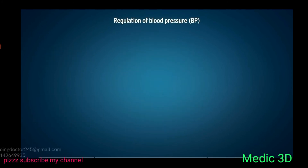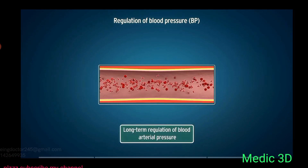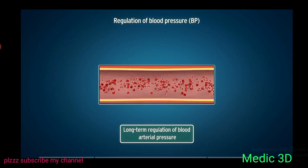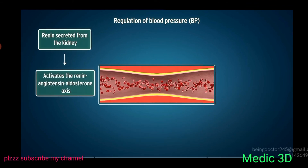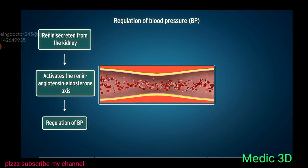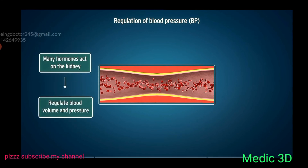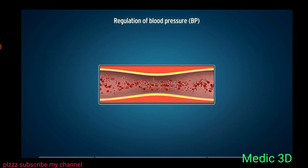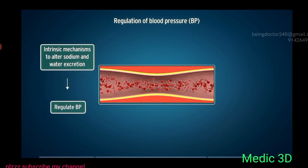Kidneys contribute mainly to the long-term regulation of arterial blood pressure. Renin secreted from the kidney activates the renin-angiotensin-aldosterone axis, which plays an important role in blood pressure regulation. Many hormones act on the kidney to regulate blood volume and pressure, and kidneys also have intrinsic mechanisms to alter sodium and water excretion to regulate blood pressure.